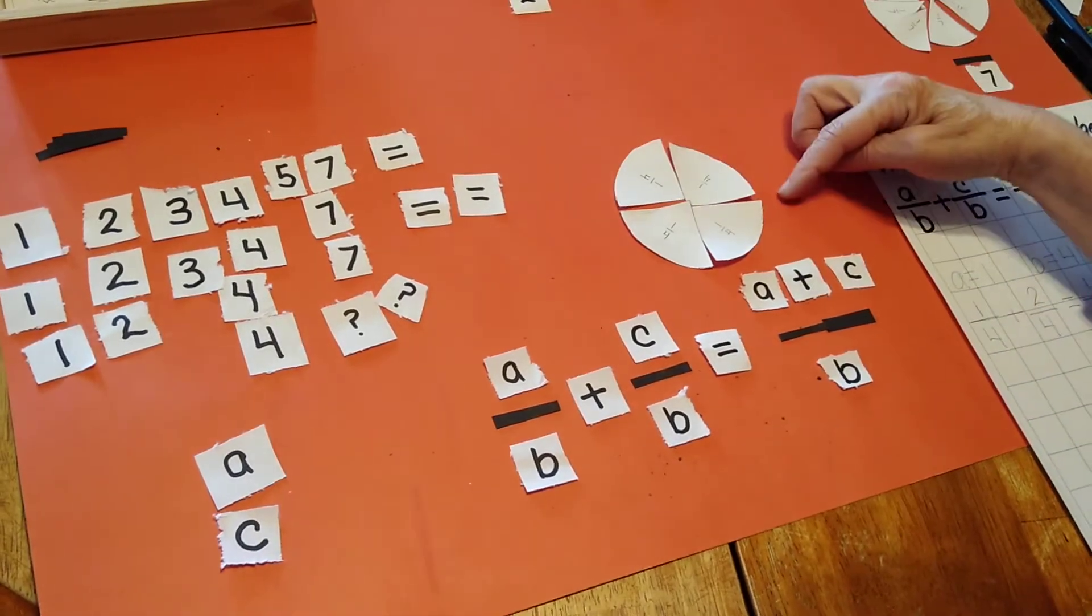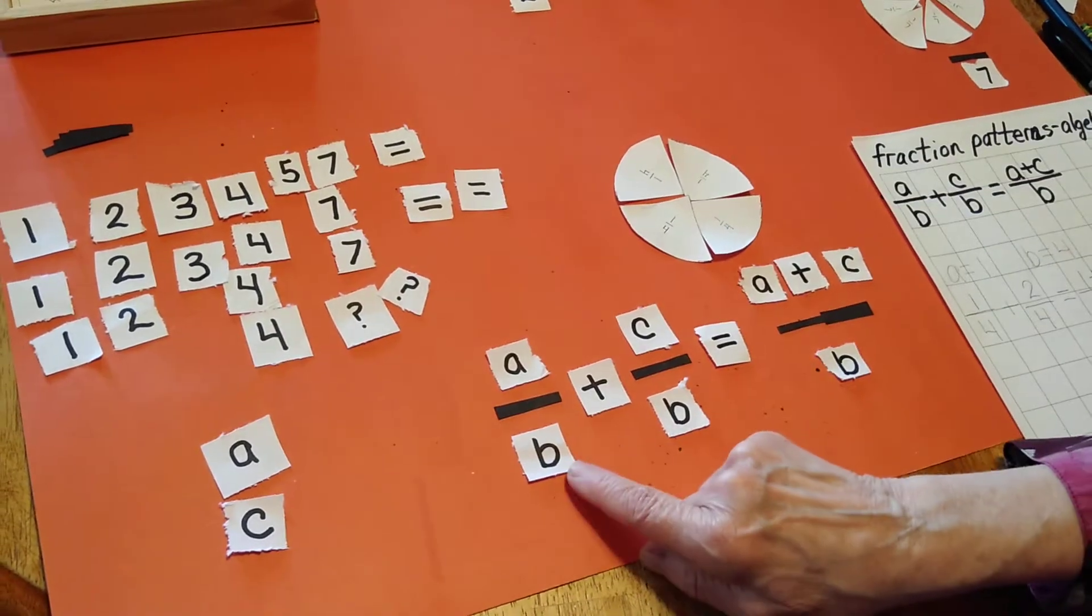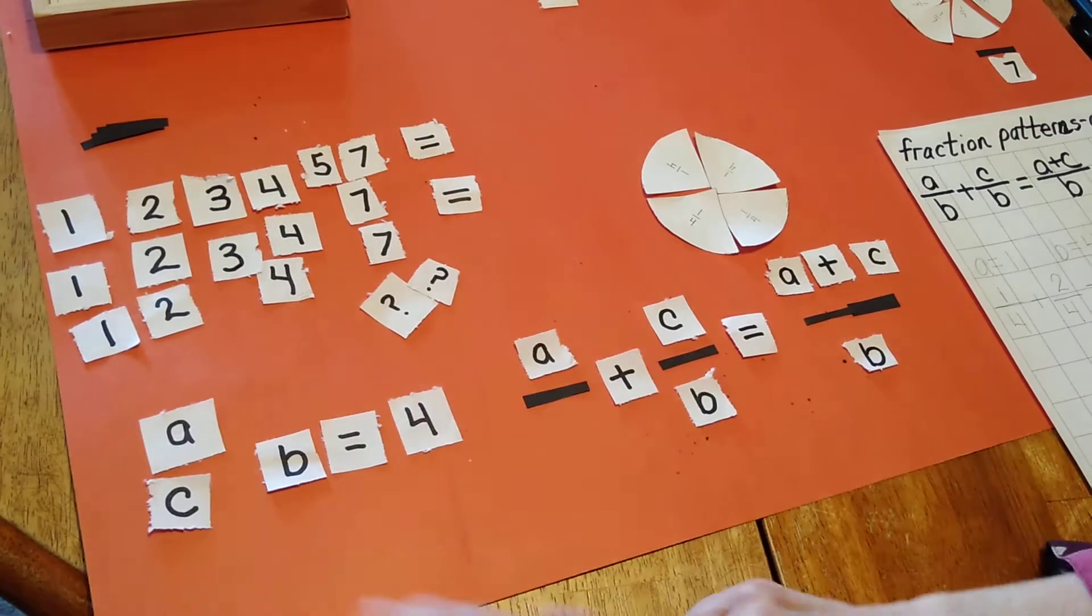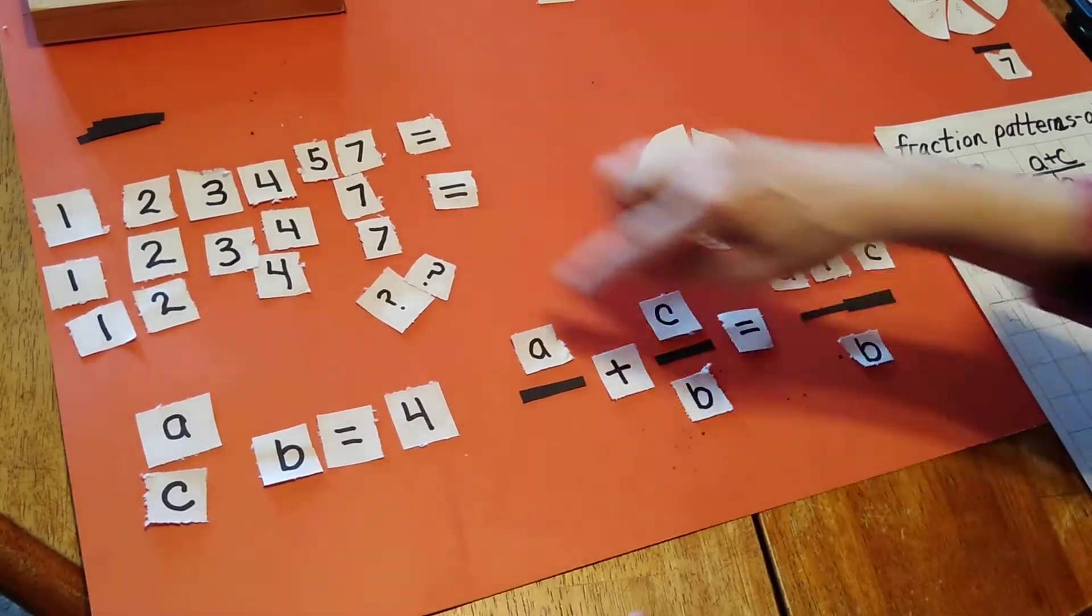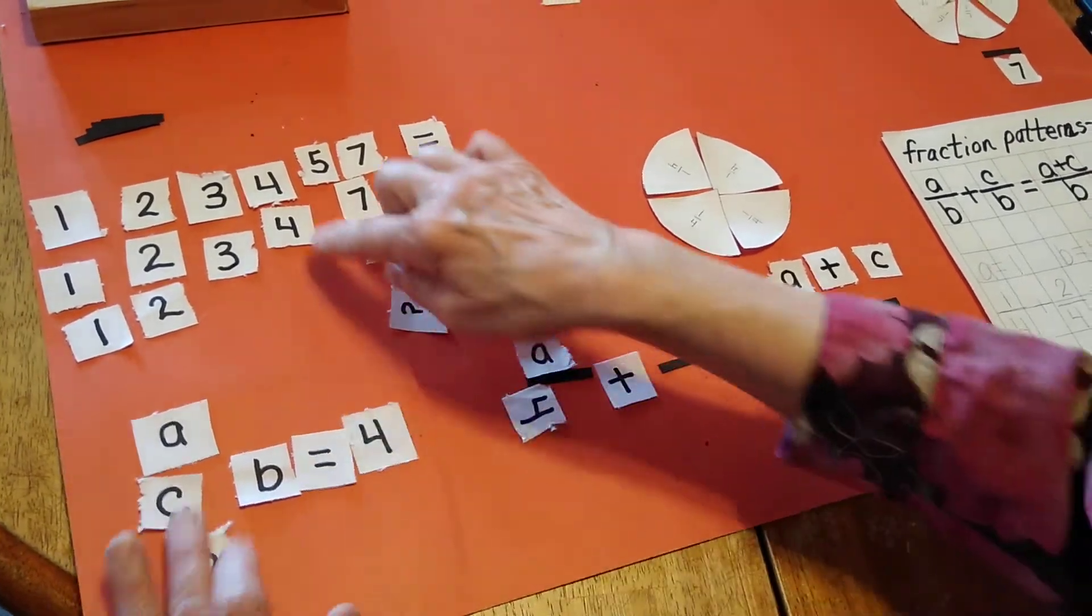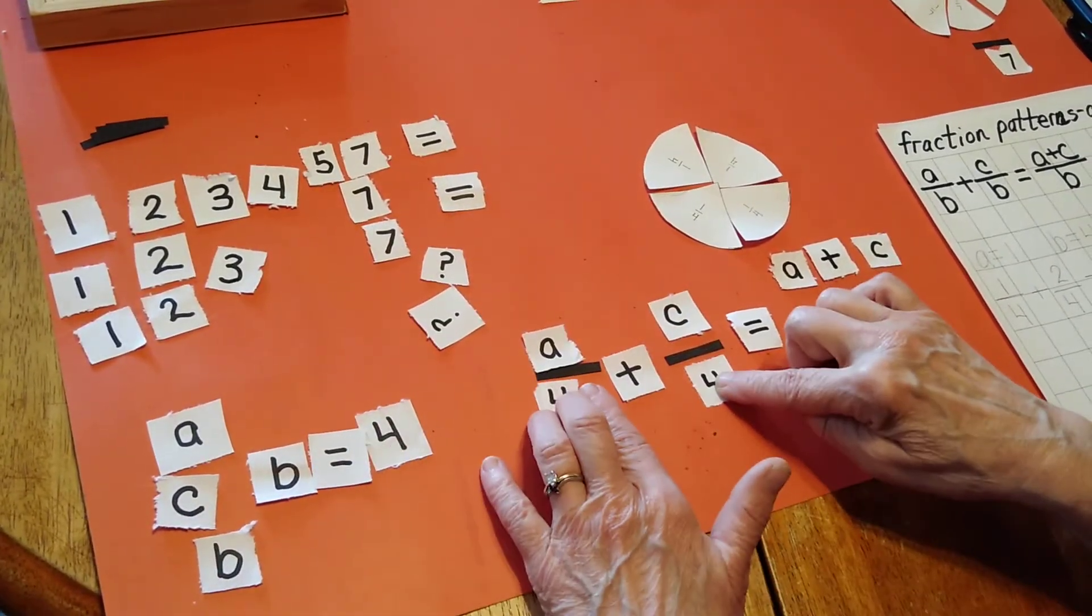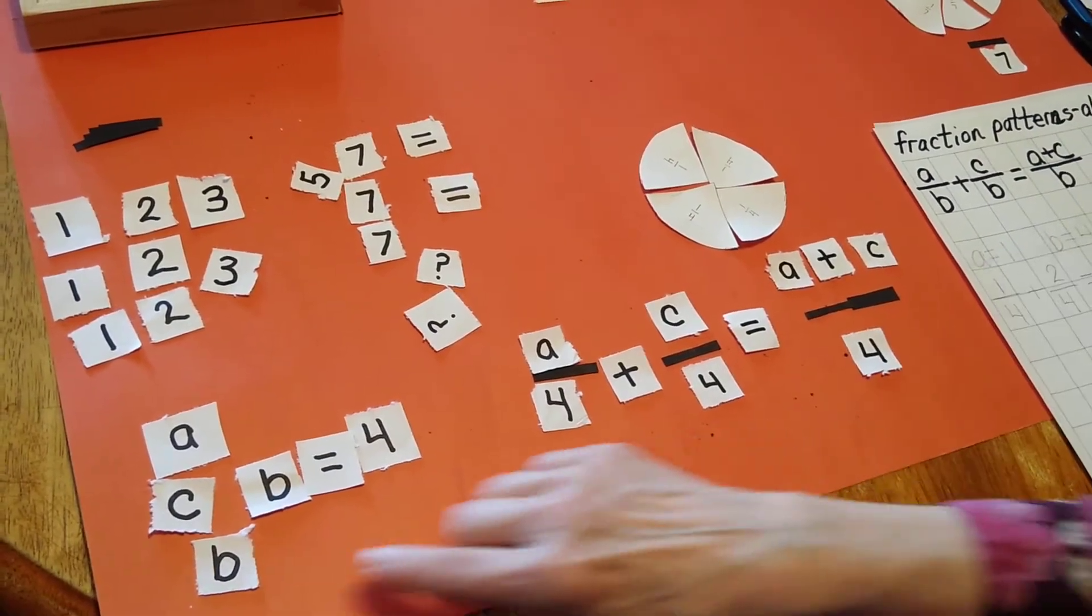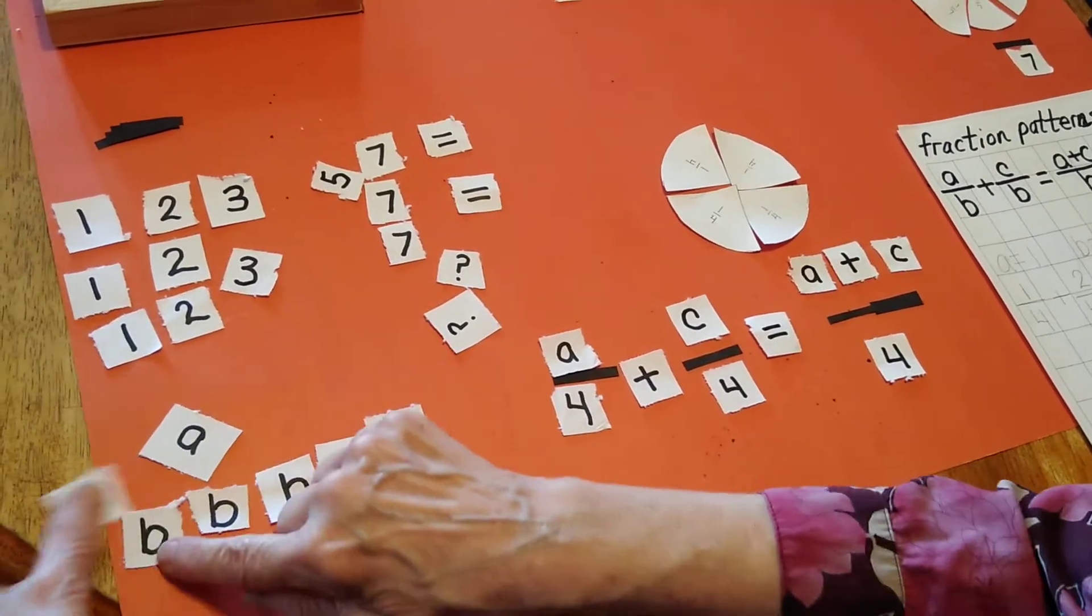So as I look here at my pizza, my denominator B is going to equal four. So wherever B is, I'm going to put a four there. B equals four.